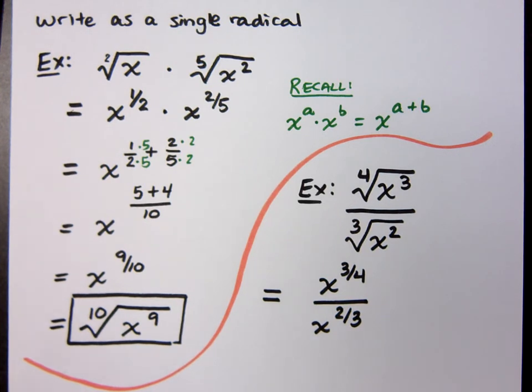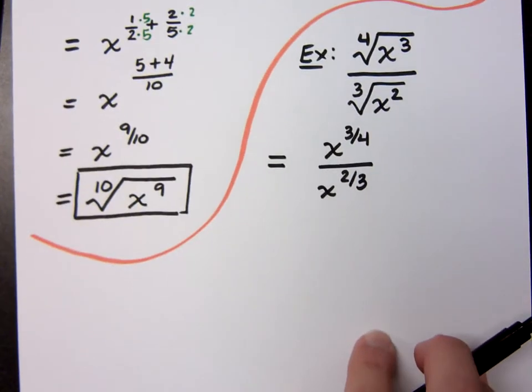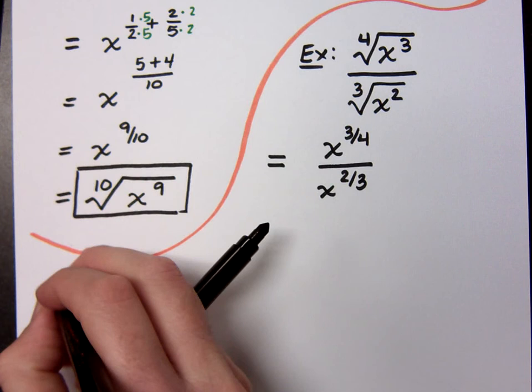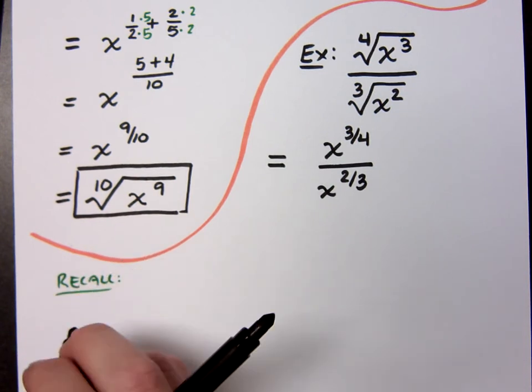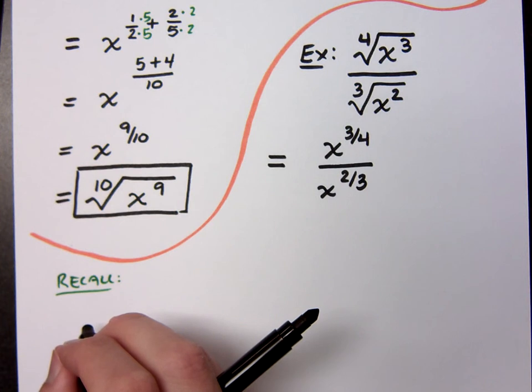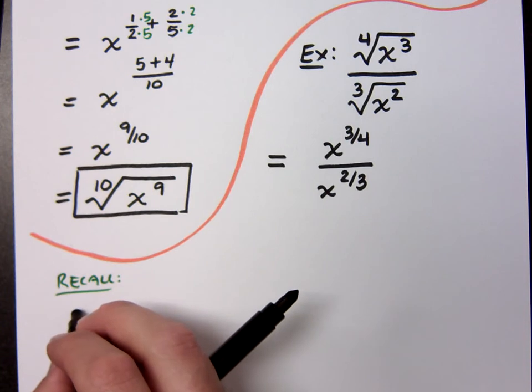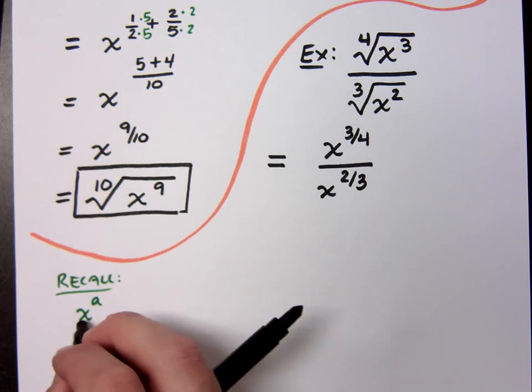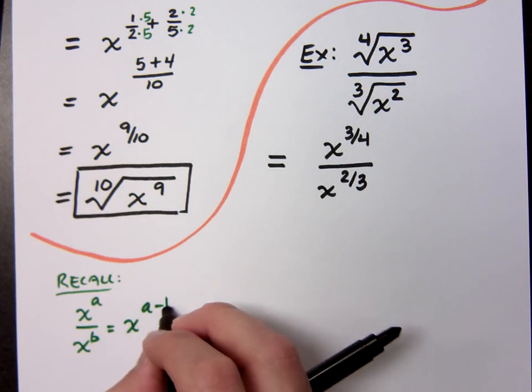Now, this kind of reminds me of something that we did back in 0308. I'm dividing, so what do I do? Do I have a fraction divided by a fraction? Do you come up with exponents? No, my rule is for exponents. If I have X to the A over X to the B, I take the top exponent minus the bottom one.